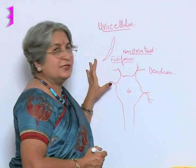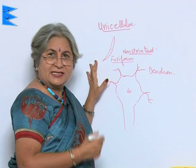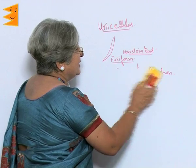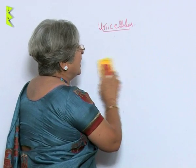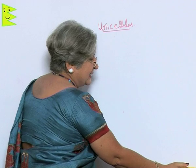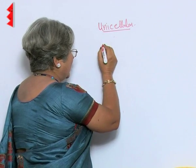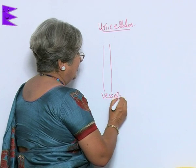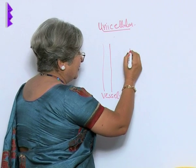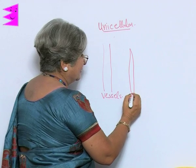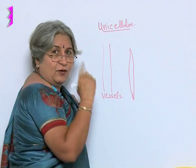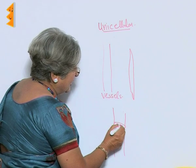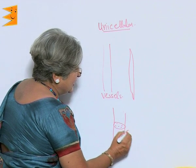Now these are the examples of animal cells; the same is true for plant cells. If we see the xylem, in the case of xylem we have tracheids and vessels — vessels are long, while tracheids are tapering at the ends. And phloem cells have sieve plates, and that is why these cells are called sieve tubes.